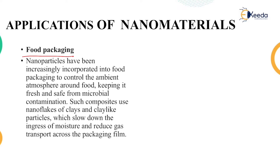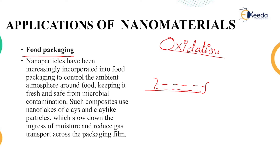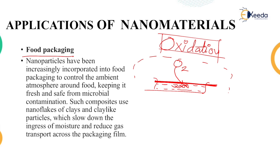Nanomaterials are used in food packaging. They have been increasingly incorporated into food packaging to control the ambient atmosphere around food. When food is packed, oxidation must be prevented — oxygen in the surrounding air reacts with food and causes decomposition. Nanomaterials can cover food without reacting with it themselves, and prevent oxygen from reacting with the food. Composite use of nano-flakes of clay and clay-like particles slows down the increase of moisture and reduces gas transport across the packaging film.